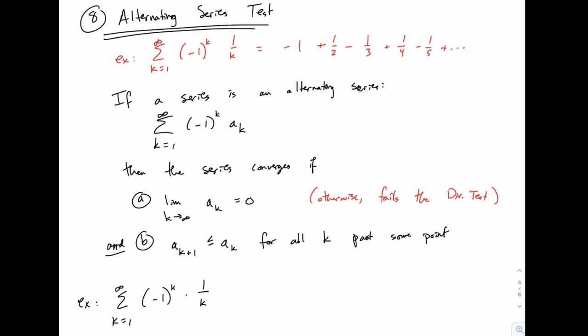The first few terms of the series look like -1 + 1/2 - 1/3 + 1/4 and so on. So if a series is an alternating series, meaning it can be written as (-1)^k or (-1)^(k+1), or something like that, times a_k,